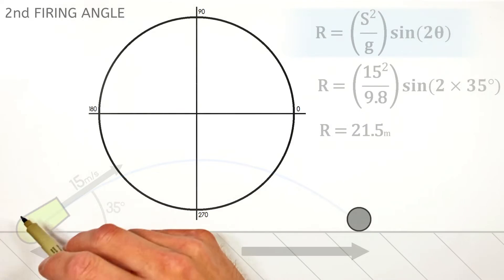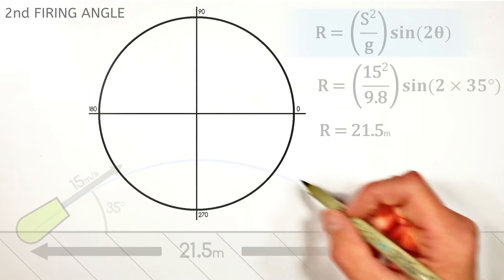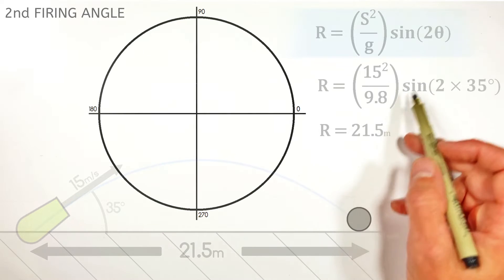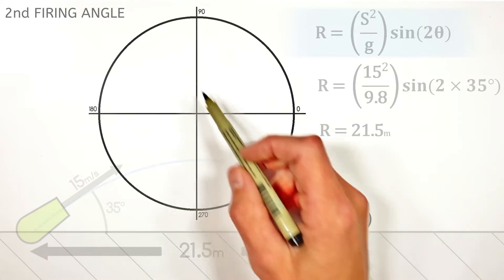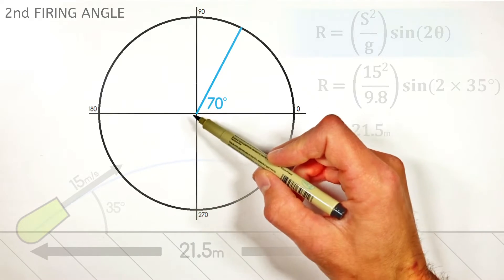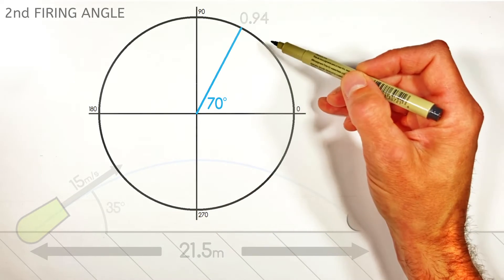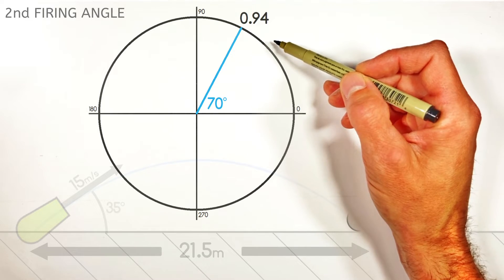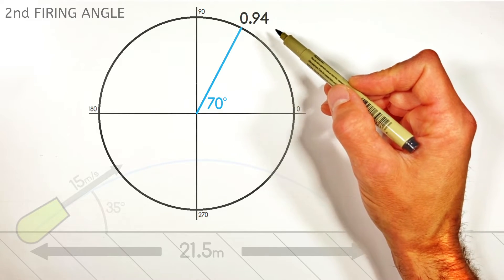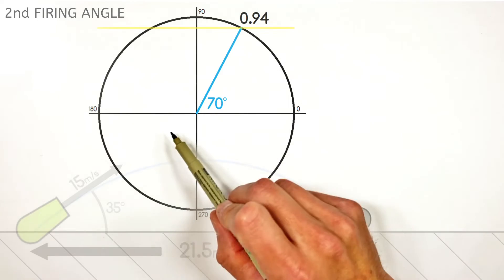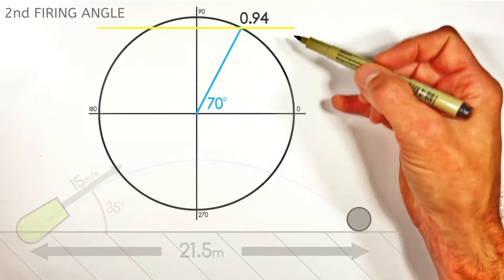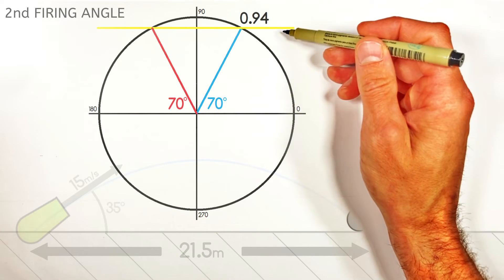You see, we fired our little cannon at 35 degrees through the air, which meant we had to take the sine of 70 degrees. So looking at the unit circle, we had to find the sine of 70 degrees, which works out to be 0.94. But the important thing here to see on our unit circle is there's a second angle that also has the same sine of 0.94.